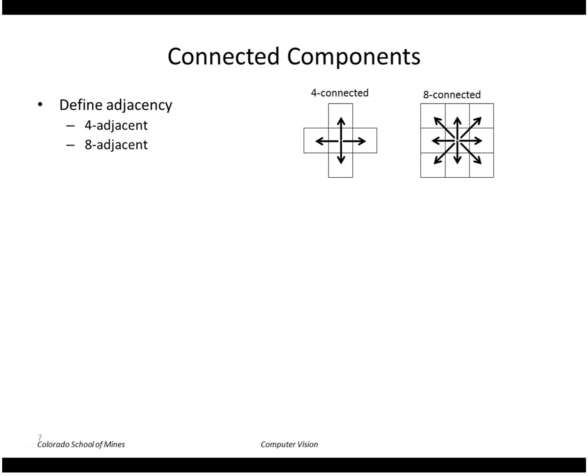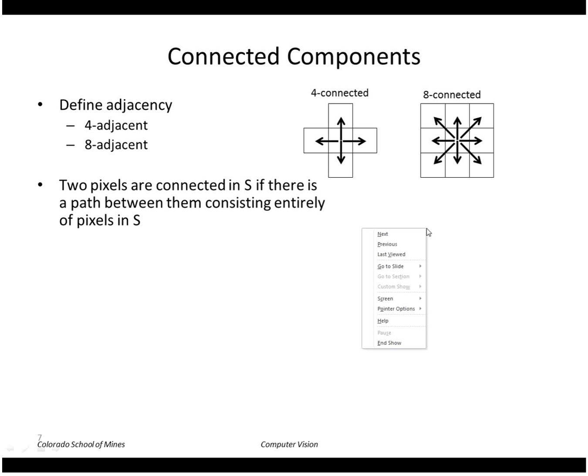Okay, so once we've thresholded the image, we want to find connected components or blobs. So first we define what we mean by connected. Four-connected means that a pixel is connected to one of its neighbors above or below or to the side. Eight-connected means that the connectivity is also allowed to be in the diagonal direction. So we say that two pixels are connected in a region s if there is a path between them consisting entirely of pixels within s.